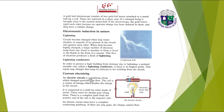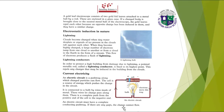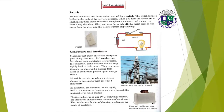An electric current is a pathway along which charged particles can flow, as shown in this picture of an electric circuit. The cell is a source of energy which pushes the charge around the circuit. It is connected to a bulb by wires made of metal, which let charge pass along them. There is a complete path from the positive end of the cell to the negative end. An electric circuit must have a complete conducting pathway — if there are any gaps, the charge cannot flow.